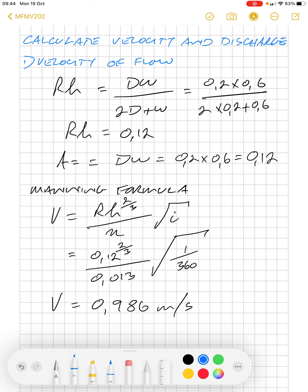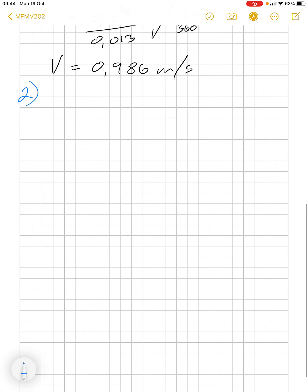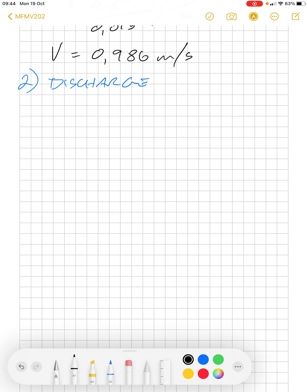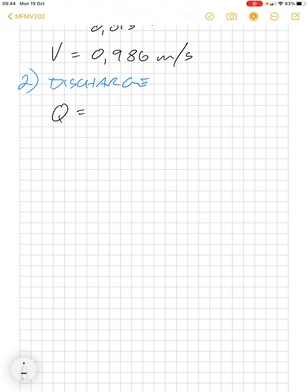Secondly, we're going to calculate the discharge. That is very simple: Q equals VA, which is 0.986 times 0.12, the area, and that gives us a value of 0.11836 cubic meters per second.